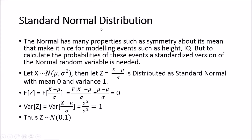The standard normal distribution is most likely the one you will be working with most of the time in your undergraduate statistics courses when you first encounter it. The normal distribution has many properties such as symmetry about its mean that make it nice for modeling events such as height and IQ, but to calculate the probabilities of these events a standardized version of the normal random variable is needed.